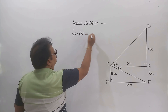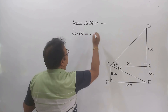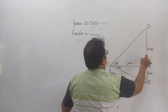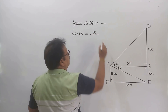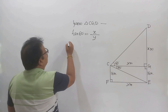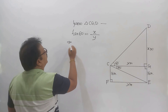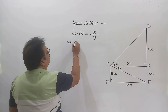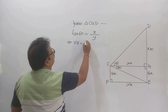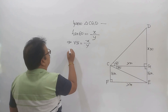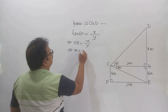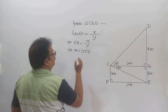From triangle DJC, tan 60 degrees equals height over base, that is x over y. So root 3 equals x over y, which implies x equals y times root 3.